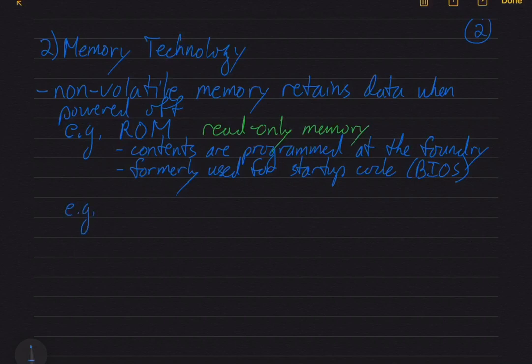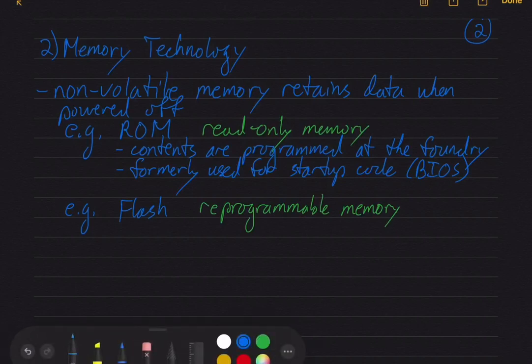And our other example is flash memory. So read-only memory, like the name says, is programmed and you can't change it. And flash, on the other hand, is a form of reprogrammable memory. Before flash, we had things like PROMs, programmable read-only memory, where you blew fuses in the chip, and that programmed the memory contents. And then we had erasable programmable read-only memories, EPROMs, and those had little quartz windows on the chip, and you would shine UV light on them for about a half hour, and that would erase the chip.